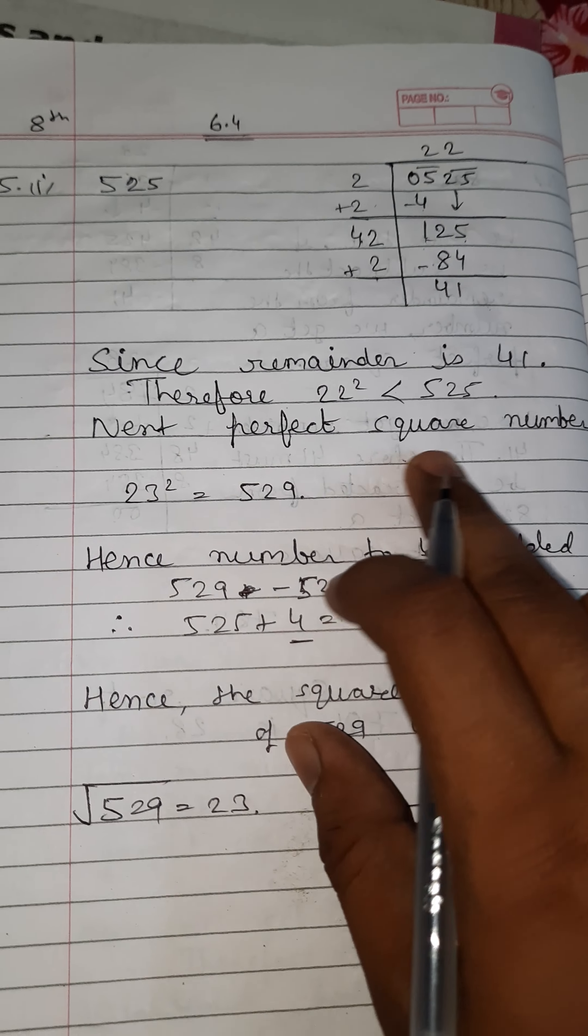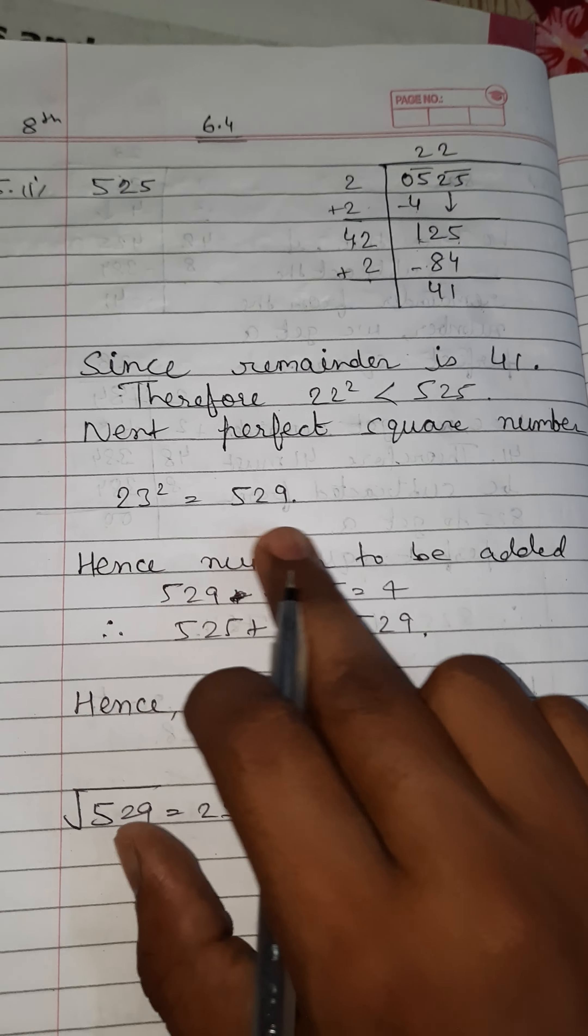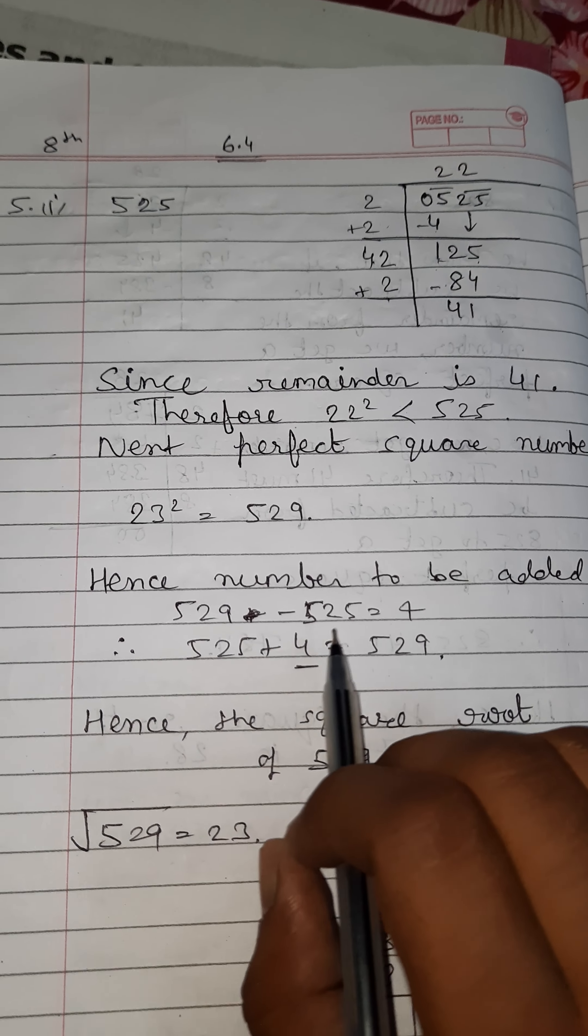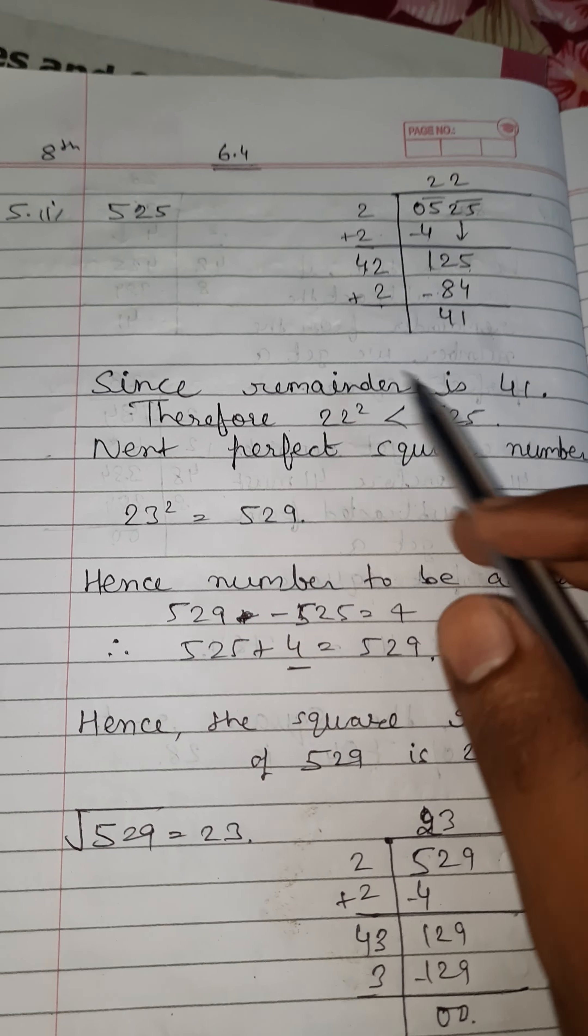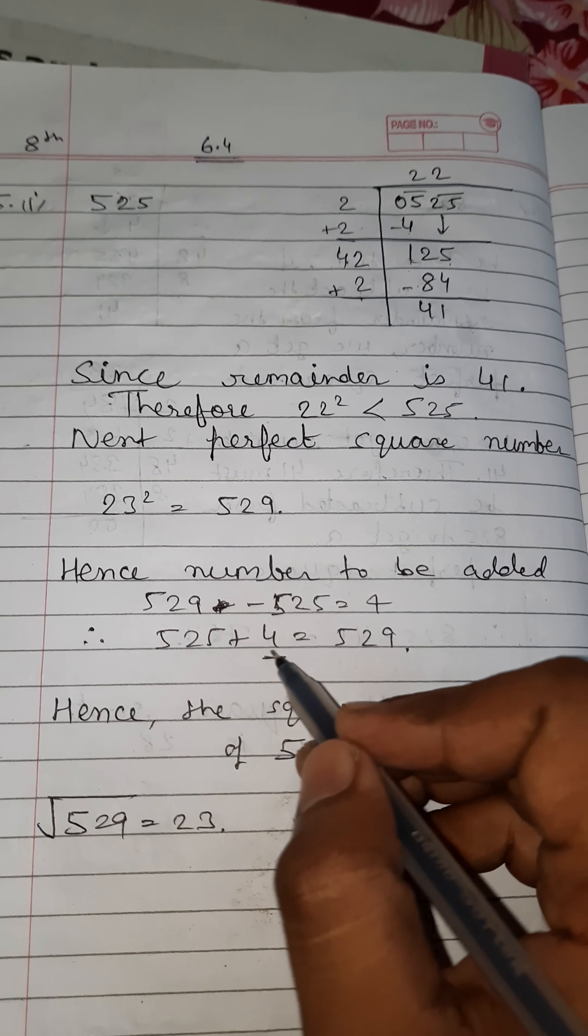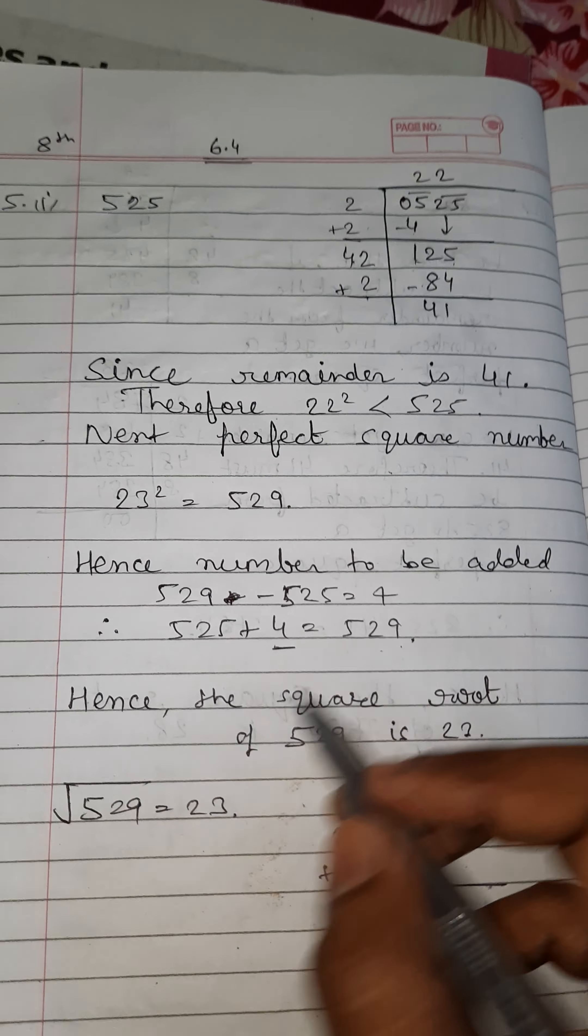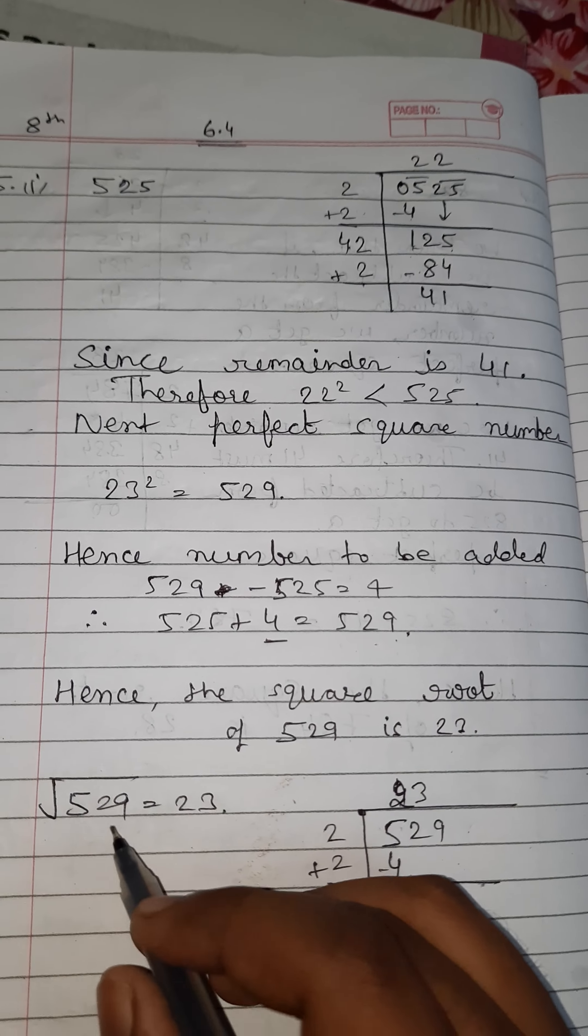Since remainder is 41, therefore the square of 22 is less than 525. The next perfect square number is 23, and the square of 23 is 529. Hence the number to be added is 529 minus 525, which equals 4.